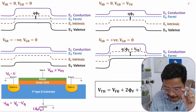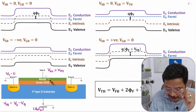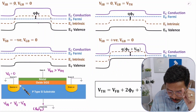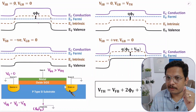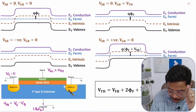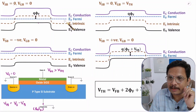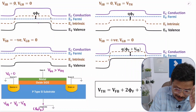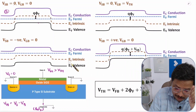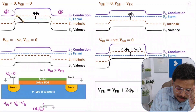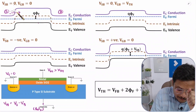Since the gate voltage is lower than the threshold voltage, there will be no formation of an inversion layer at the junction of SiO2 and the semiconductor. With no inversion layer, drain-to-source current cannot flow. Using the energy band diagram, we can understand this resistance to electron flow.